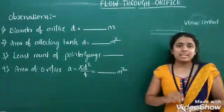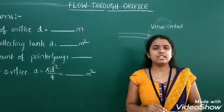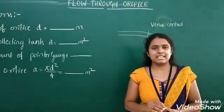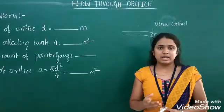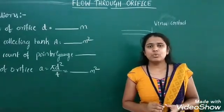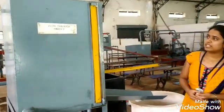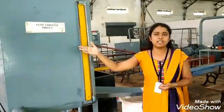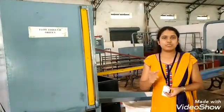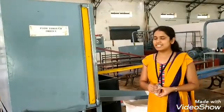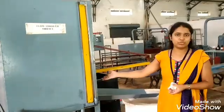An opening is considered as an orifice only when the water level is above the top surface of the orifice. The aim of the experiment is to determine the coefficient of velocity, coefficient of discharge, coefficient of resistance, as well as the coefficient of contraction when water is flowing through the orifice.